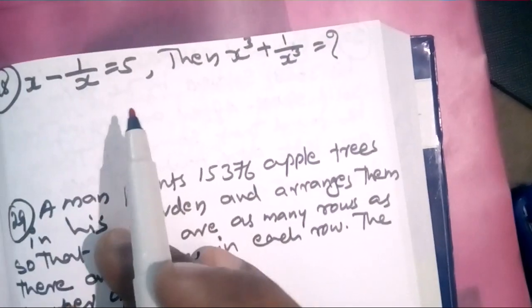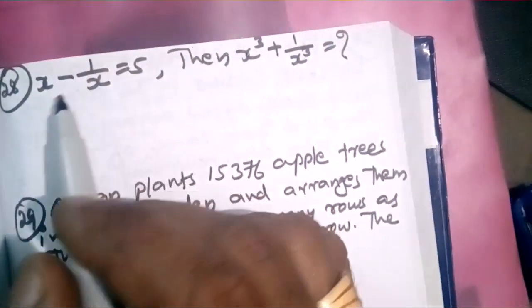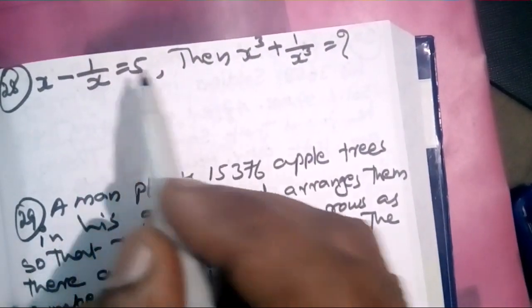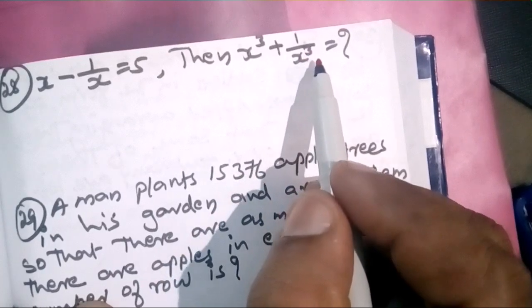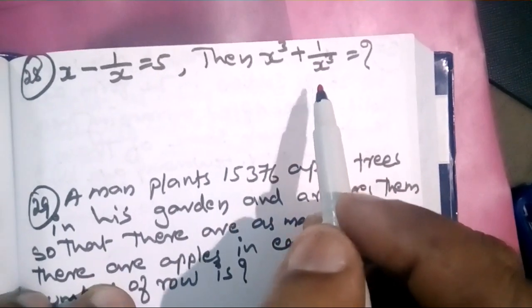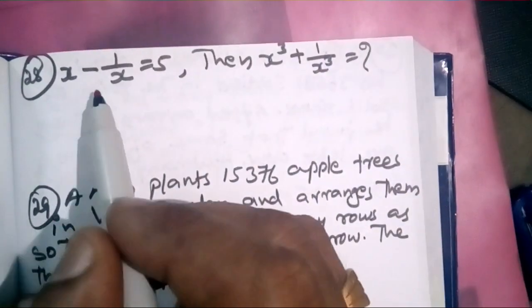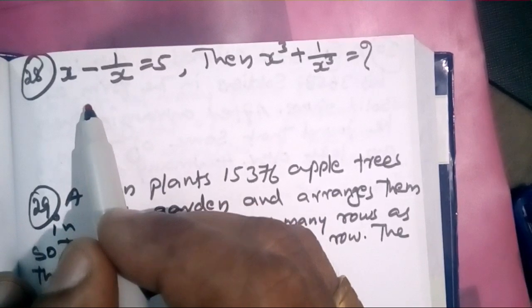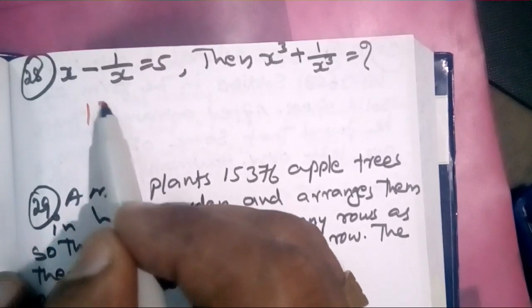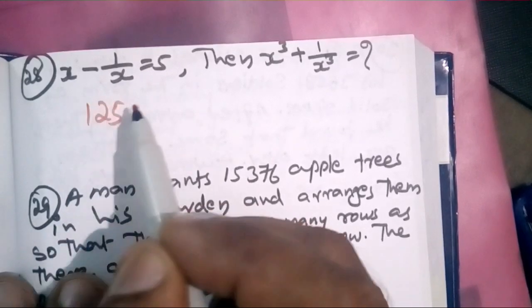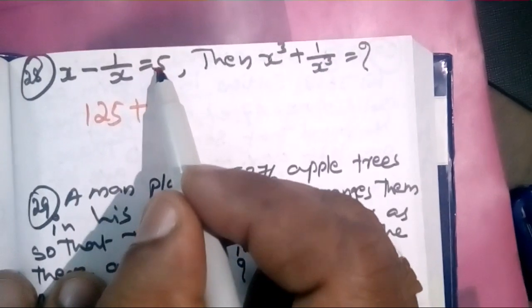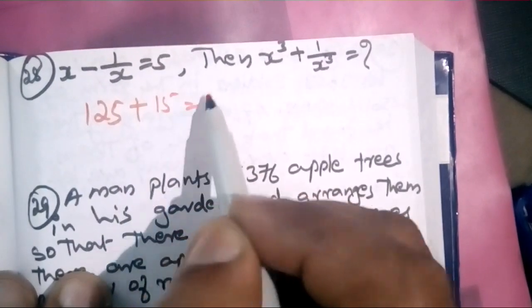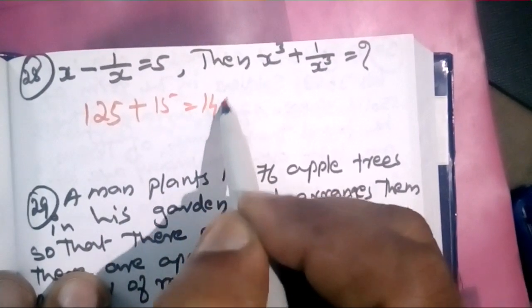If x minus 1 by x equals 5, then x cubed plus 1 by x cubed. We apply 5 into 3 equals 5, and 5 into 3 is equal to 5.